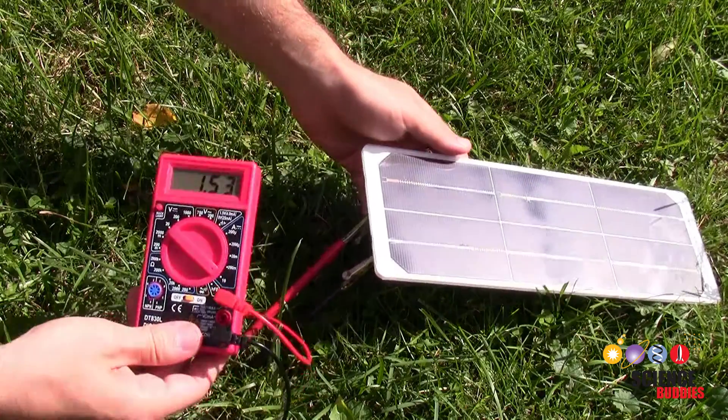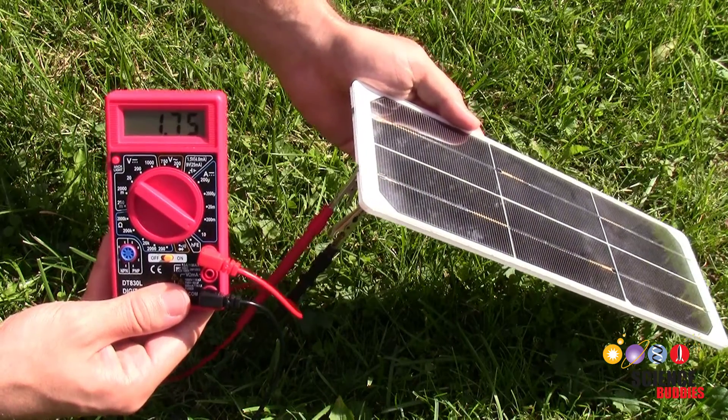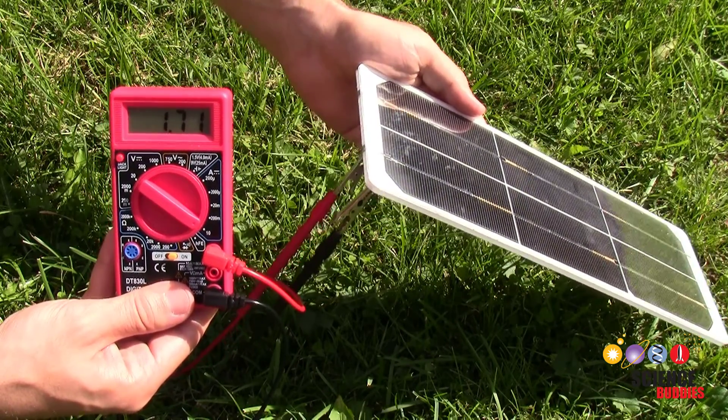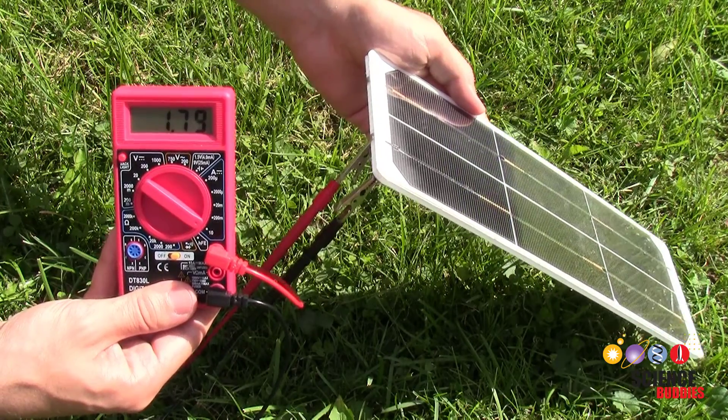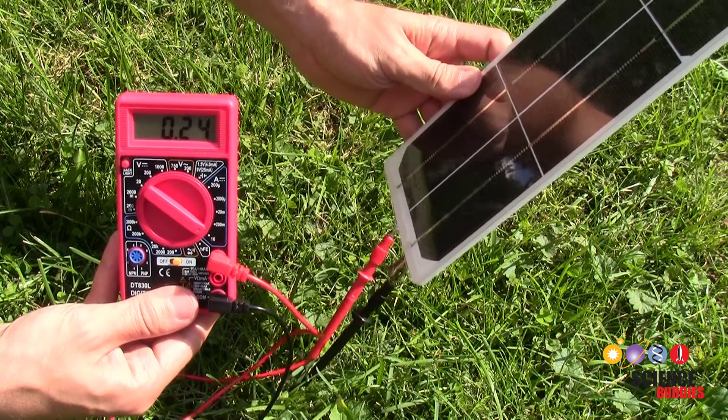Optionally, you can demonstrate the solar panel's output using a multimeter to measure the current. You see here that when I point the panel directly at the sun, it generates a current of almost 2 amps. As I tilt the panel away from the sun, the current drops to almost zero.